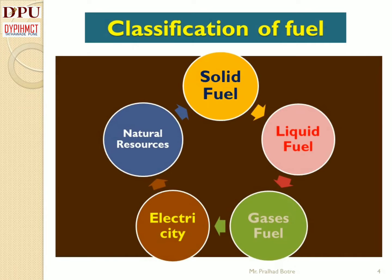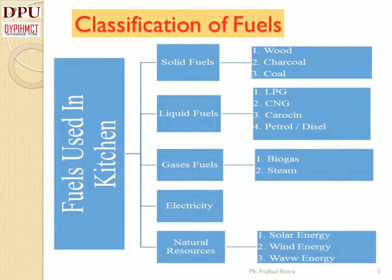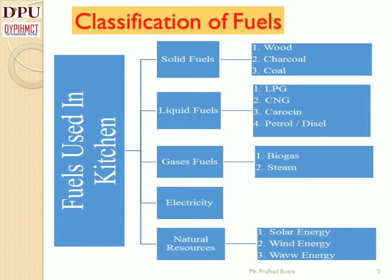Classification of Fuel: Fuel is classified into five parts — solid fuel, liquid fuel, gaseous fuel, electricity, and natural resources. There are various types of fuels used in the kitchen to operate equipment and aid in cooking. Solid fuels include wood, charcoal and coal; liquid fuels include LPG, CNG, petrol, diesel, kerosene; gaseous fuels include biogas and steam; electricity; and natural resources like solar, wind, etc.